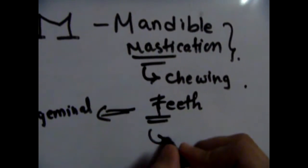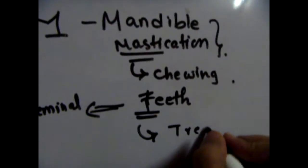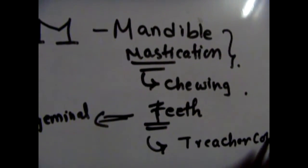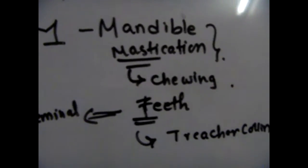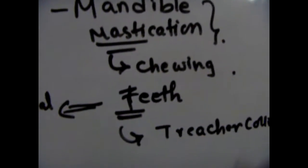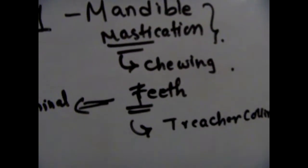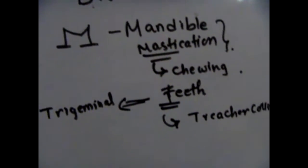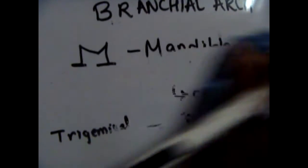The T also helps us remember the abnormality associated with the first branchial arch, and that is Treacher Collins syndrome, in which there is an abnormality in development that causes mandibular hypoplasia and there are a lot of facial anomalies associated with Treacher Collins syndrome.